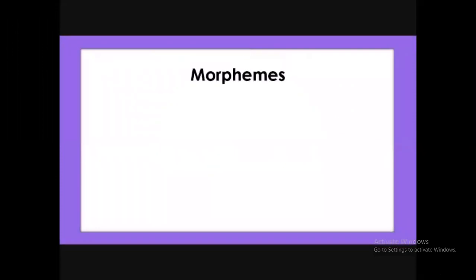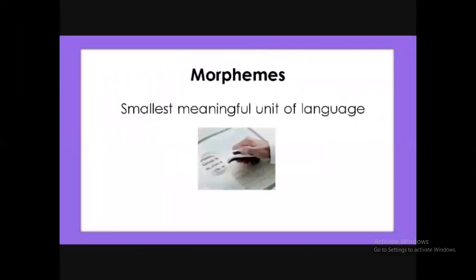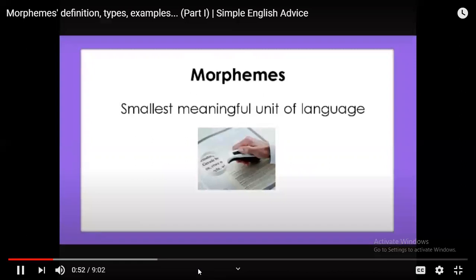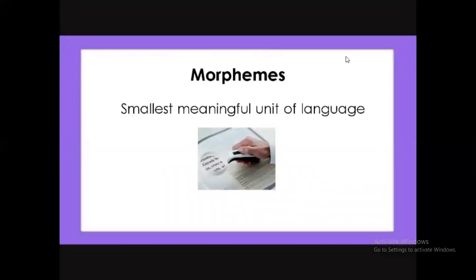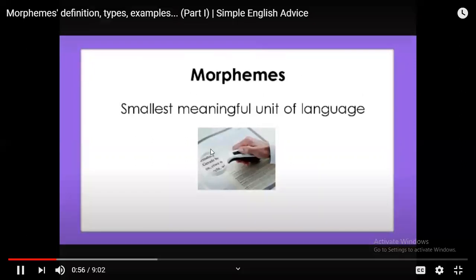A morpheme is the smallest portion or unit of language with meaning — of all language in general, not only English. You cannot divide a morpheme without losing its meaning.